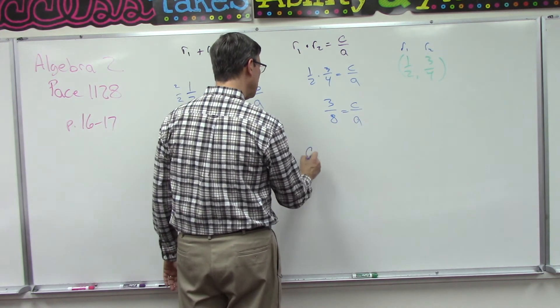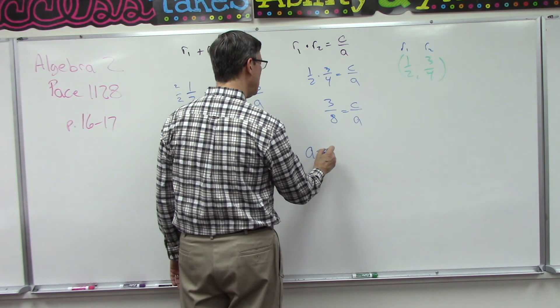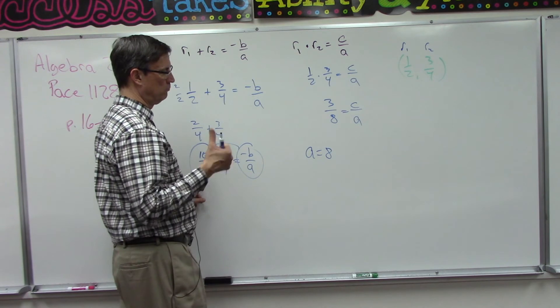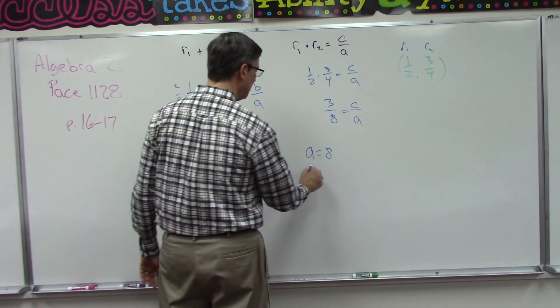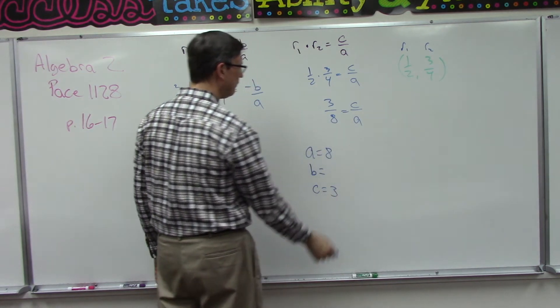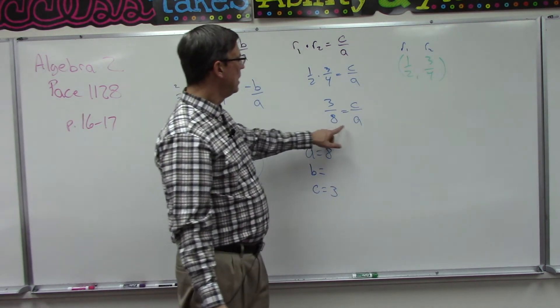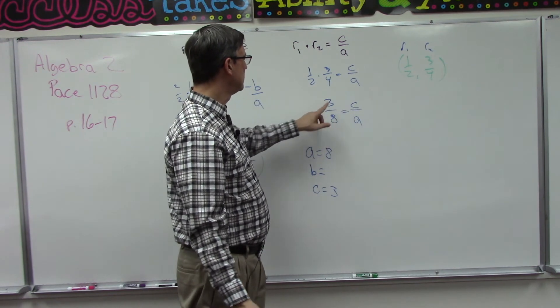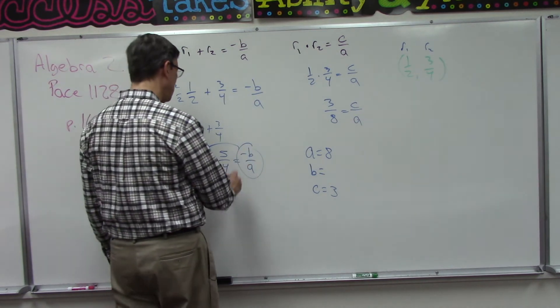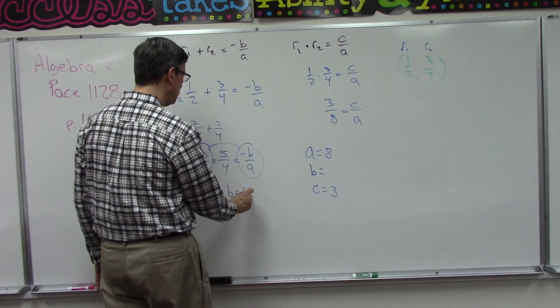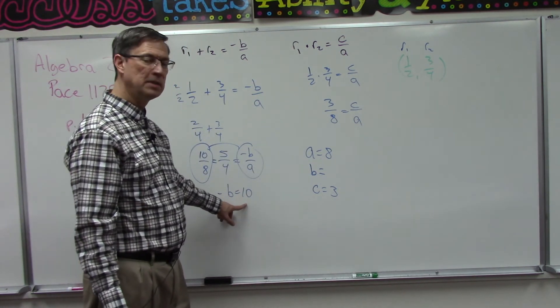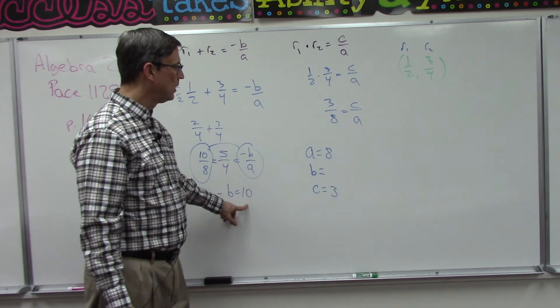All right, so just by looking at this I can say, ah, a is eight. It was eight here, a corresponds to eight here, we're good. c is three. So a corresponds to eight, therefore negative b corresponds to 10. Now be careful, we're looking for b. If the opposite of b is 10, then what does that tell you? b has to be negative 10.